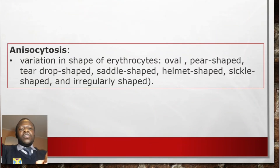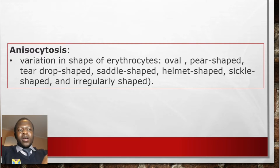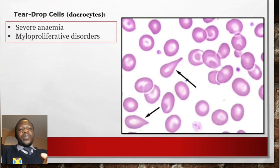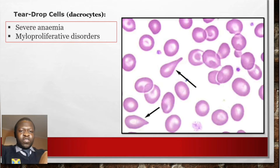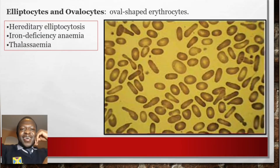Anisocytosis describes a variation in shape of erythrocytes — they can be oval, pear-shaped, teardrop-shaped, saddle-shaped, helmet-shaped, sickle-shaped, or irregularly shaped. Teardrop cells, also known as dacrocytes, are found in severe anemia and myeloproliferative disorders.